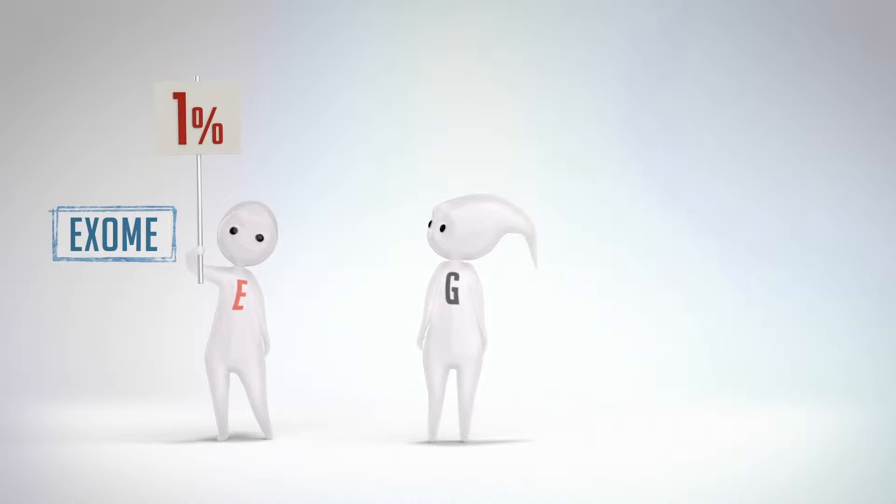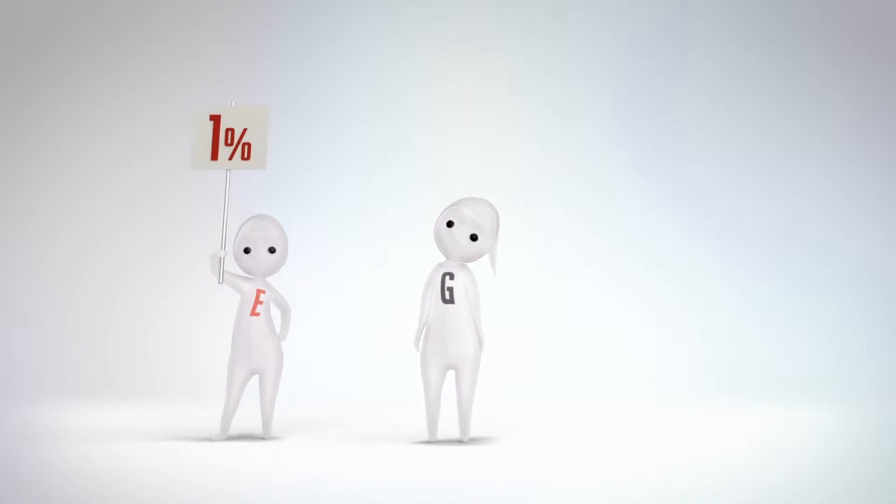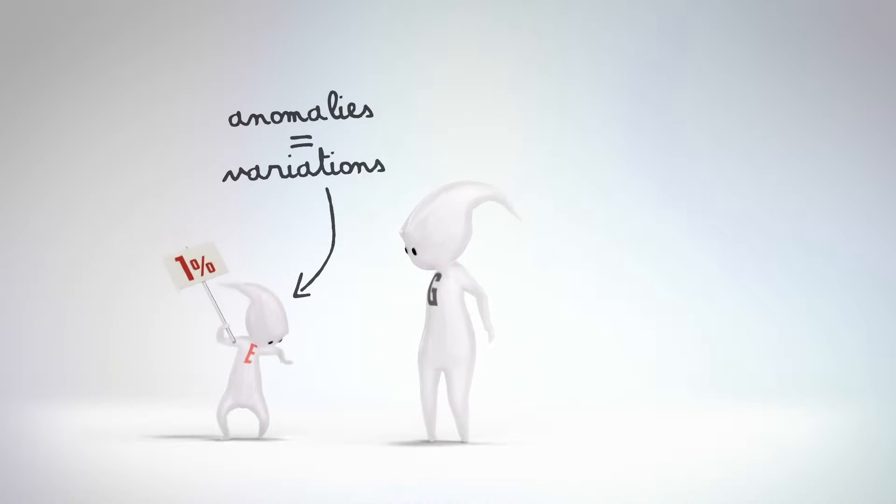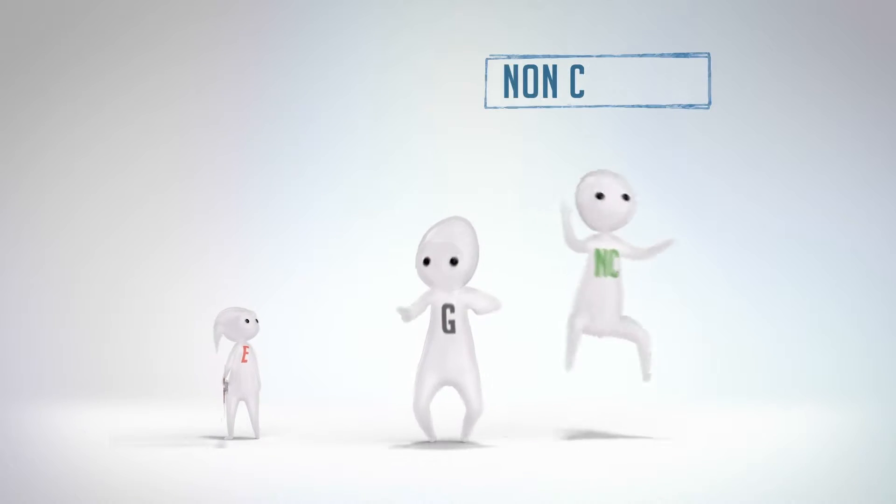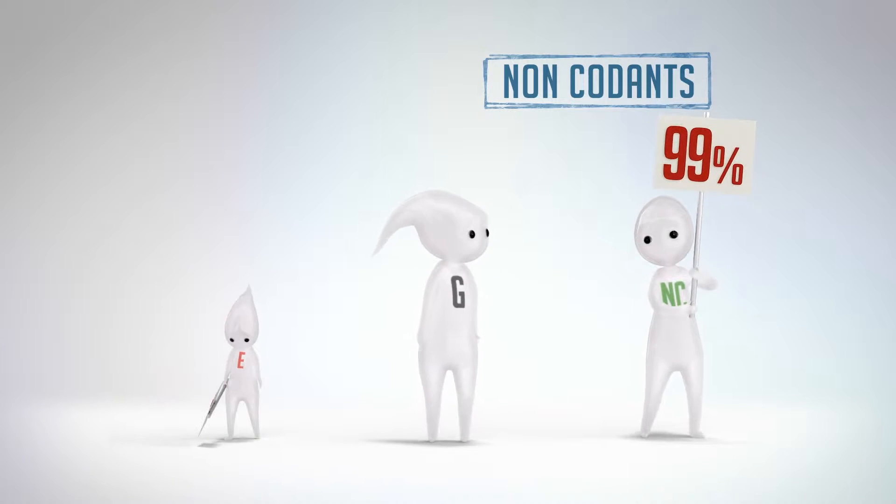L'ensemble des exons du génome est appelé l'exome. Bien qu'il ne corresponde qu'à 1% du génome, c'est dans l'exome qu'on retrouve la grande majorité des anomalies dites variations et qui sont responsables des maladies génétiques rares. Les 99% du génome restant sont dits non-codants.